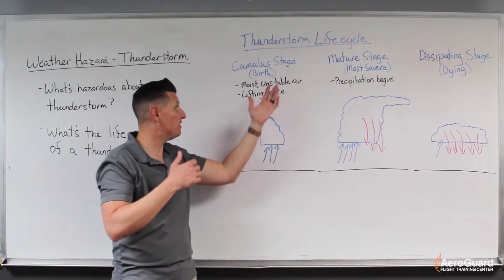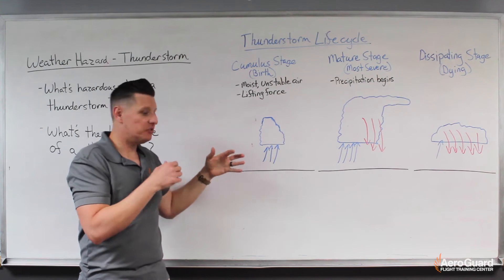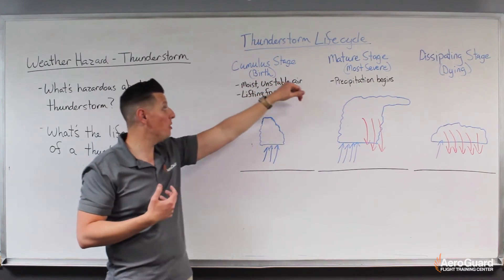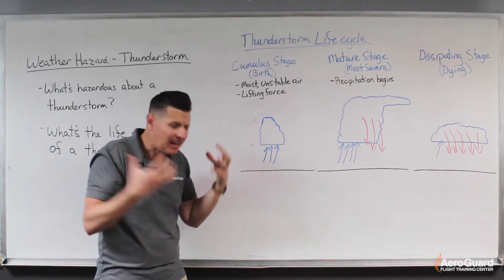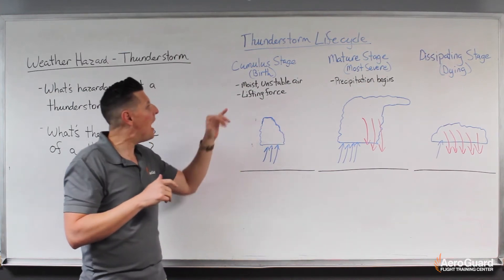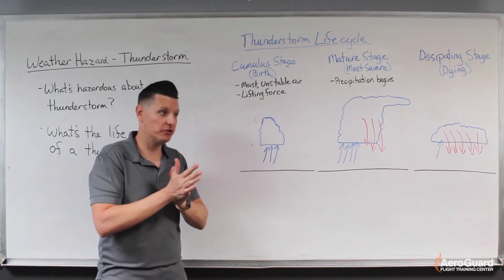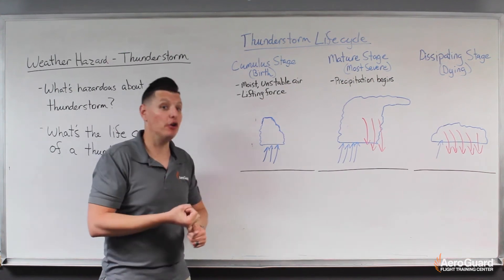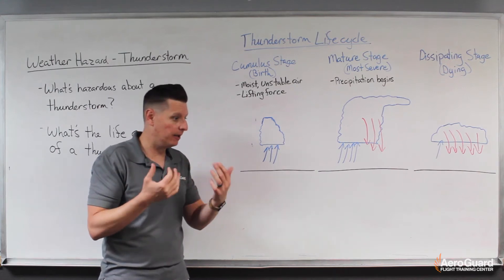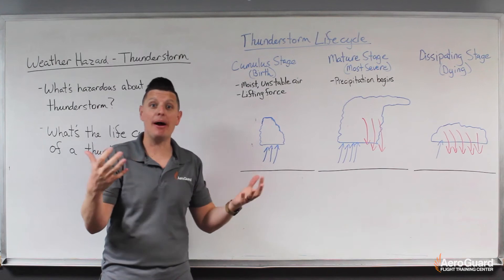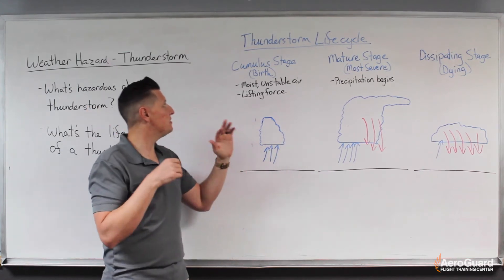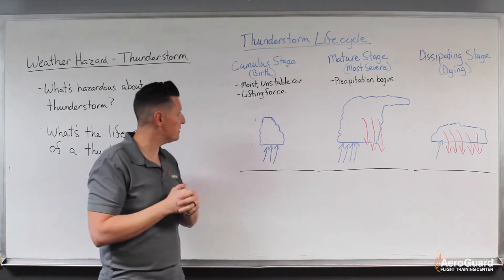In the cumulus stage, we can think of that as the birth of a thunderstorm — the culmination of a bunch of ingredients coming together. First and foremost, we have to have moist unstable air, and then we need some kind of a lifting force. Commonly that could be fronts, where air masses collide and one forces the other up, or orographic lifting, where an air mass moves over terrain like a mountain and is forced upward.